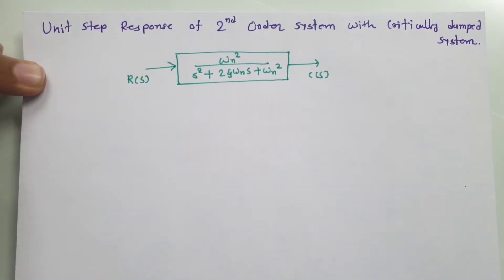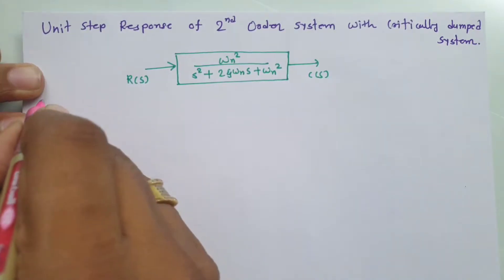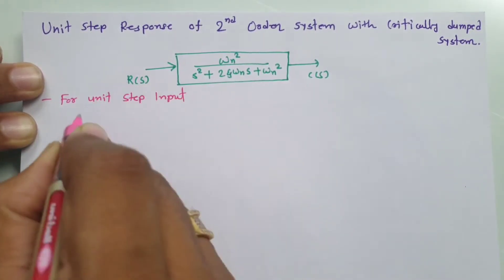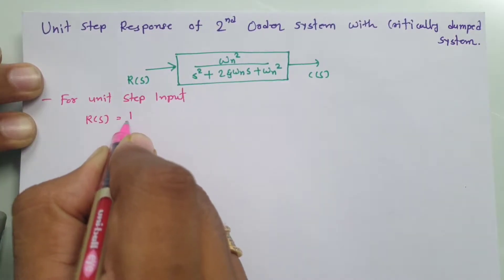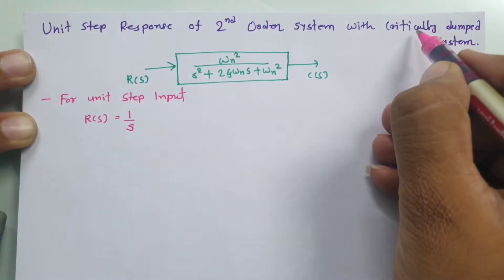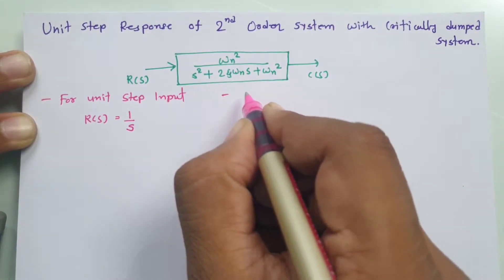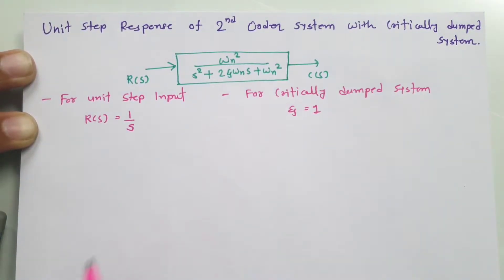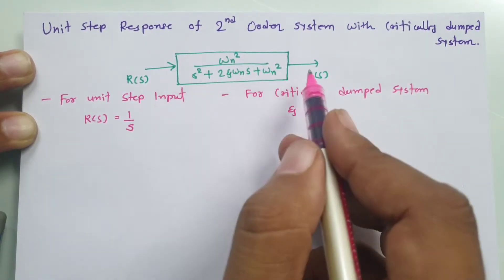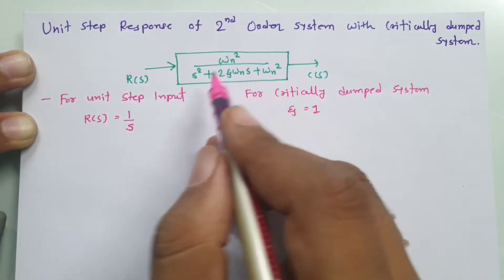We have a unit step input signal, so R(S) equals 1 divided by S. For the second order system with the critically damped case, zeta equals 1. To find the response, we need the transfer function C(S) divided by R(S), which equals the standard second order system expression.